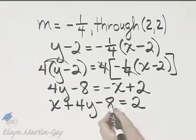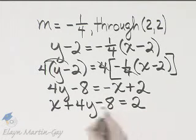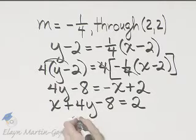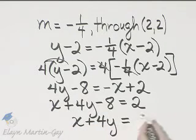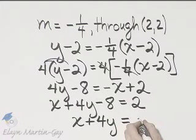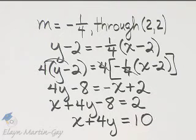And then I'll add 8 to both sides. If I add 8 to the left side, I'll have x plus 4y is equal to, and then add 8 to the right side, 2 plus 8 is 10.